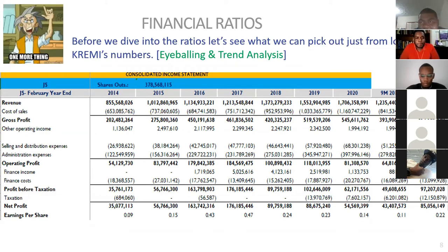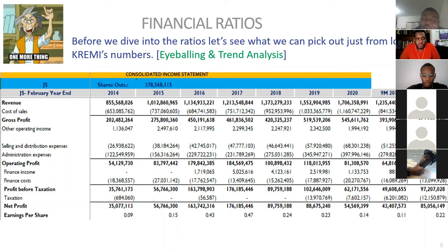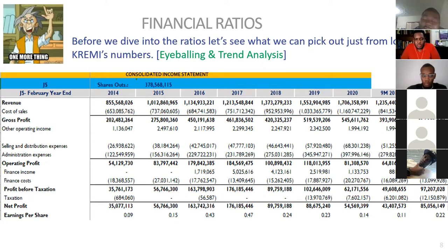For the first five years when a company is listed on the Junior Market — the most recent company is Tropical Battery, which listed on the Junior Market late last year — up to late 2025 they don't pay 100% of their corporate income tax. For the next five years, between 2025 and 2030, they only pay 50% of their corporate income tax. Every year after 2030, as long as they stay listed, they pay the normal corporate income tax of 25% of their income for non-regulated companies.